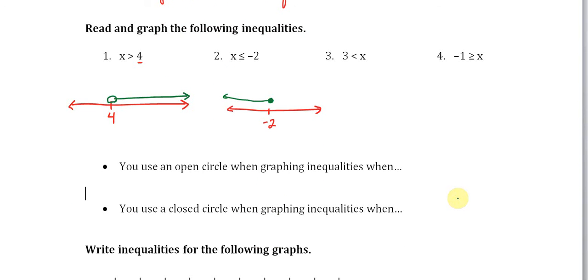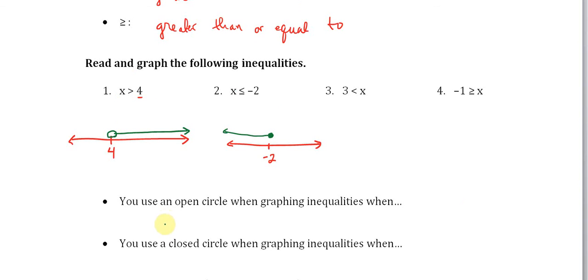Let's talk about open and closed circles. We use an open circle when graphing inequalities when the inequality does not have 'or equal to.' Another way of saying this is we call it a strict inequality. Strict means that it cannot touch those points. So in this case, x is greater than 4, we leave it as an open circle.